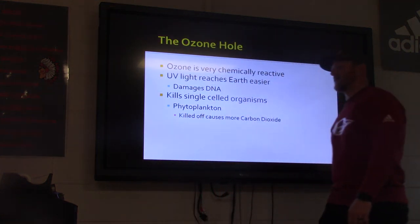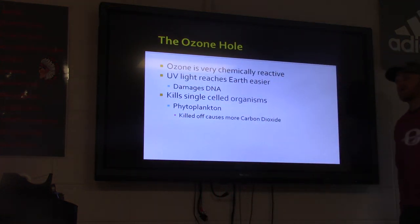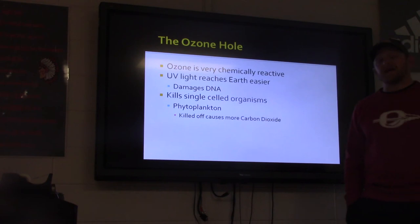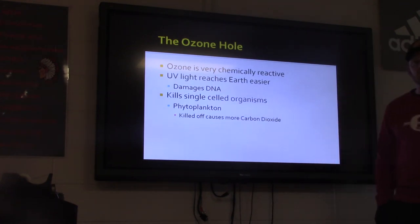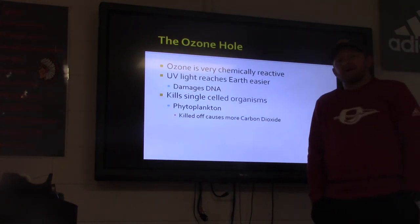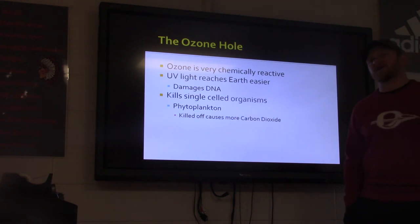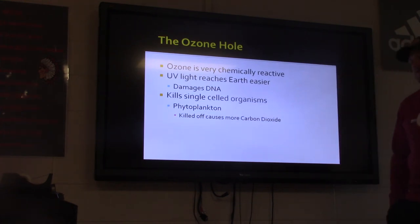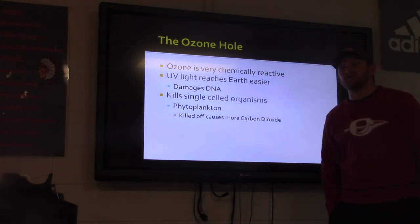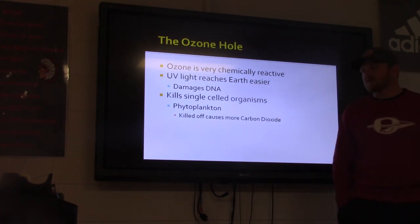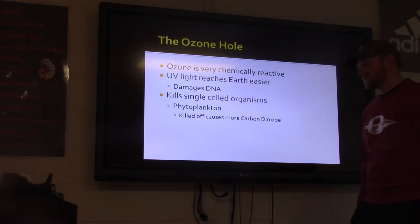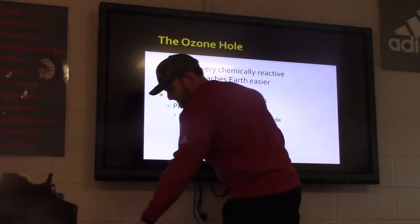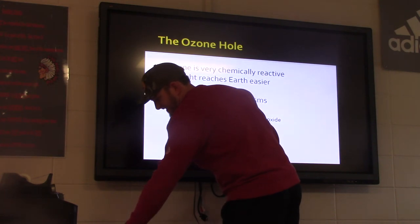Ozone is very chemically reactive. UV light reaches Earth more easily and can damage our DNA — that's what leads to cancer, as those cells begin to replicate uncontrollably. UV also kills phytoplankton, single-cell organisms, and we know how many different animals rely on phytoplankton in our oceans, so that affects the whole food chain.